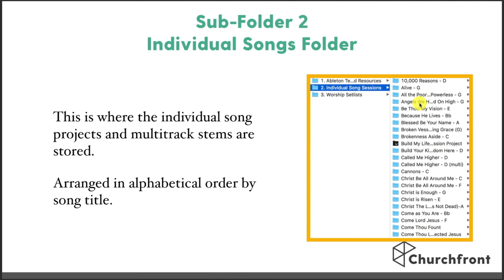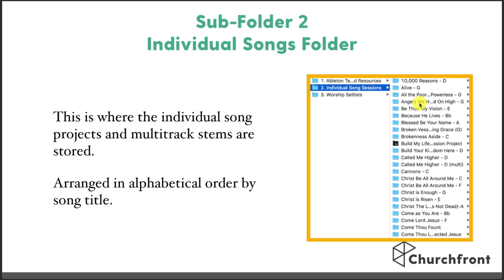Subfolder number two contains the individual song projects. Every single song that we have in our worship song library — if we do a song on Sunday morning, I create a separate Ableton Live project for that song. This is really important to understand. You create a separate Ableton Live project for all the individual songs in your library, and then on a week-to-week basis you're just going to be building setlists by dragging those individual songs in. I put them in alphabetical order by song title.